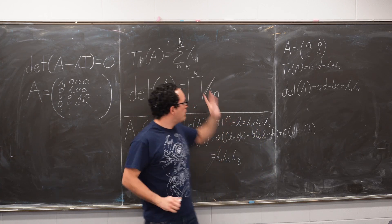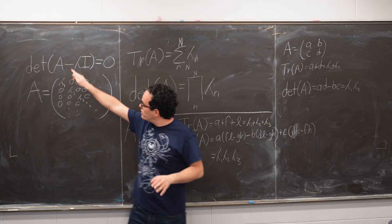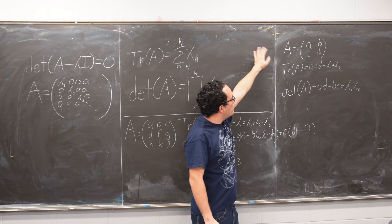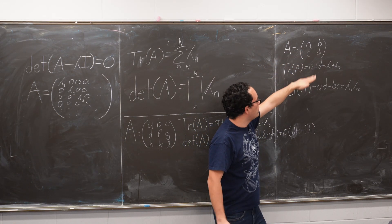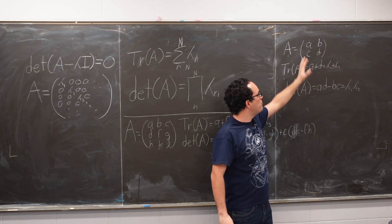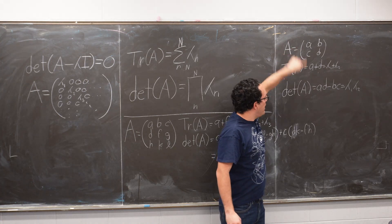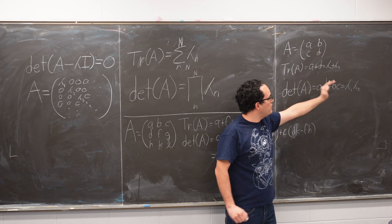Now I'm going to show you how you can use this to find the eigenvalues way easier than using the characteristic equation. So let's say that we have a 2x2 matrix like this one. Then the trace is just equal to a plus d, and that will be equal to λ1 plus λ2. And then we can calculate the determinant very easily: a times d minus b times c, and this will be equal to λ1 times λ2.